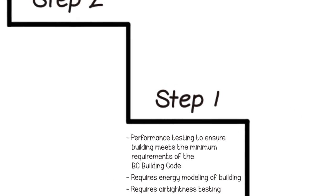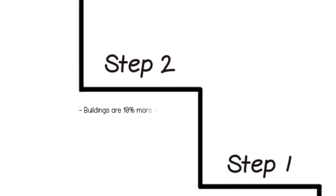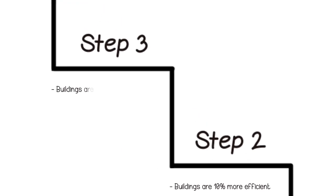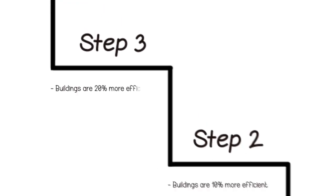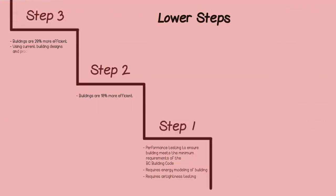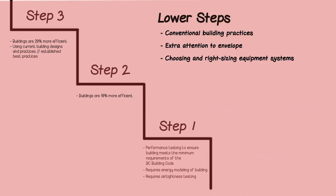Steps two and up require higher performance levels than what the code requires. Step two buildings are 10% more efficient than buildings built to the baseline requirements of the BC Building Code. Step three new buildings are 20% more efficient. Together, steps one to three are the lower steps. Building professionals can achieve these lower steps simply by using current building designs and practices, in combination with established best practices in building envelopes and systems.